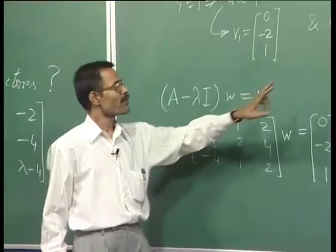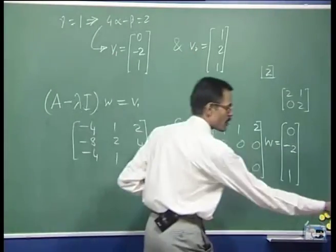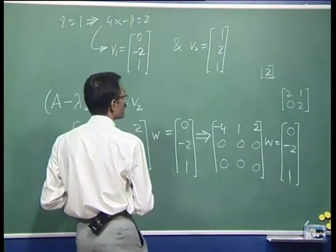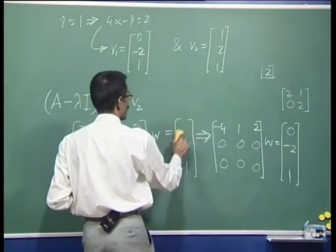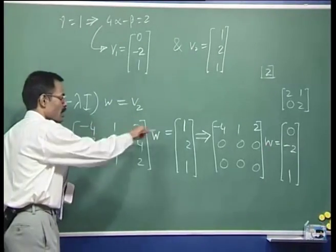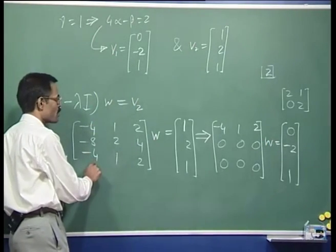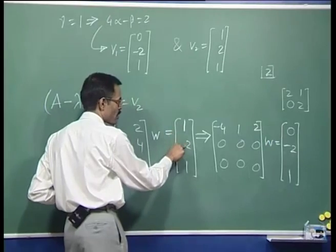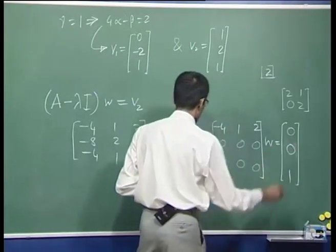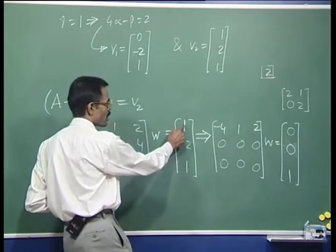That means the generalized eigenvector has to come from some other eigenvector. So we try with v2 = [1, 2, 1]. When you do the row operations — subtracting twice the first row from the second row and the first row from the third row — from the second row you get 0, and from the third row you also get 0 after subtraction.